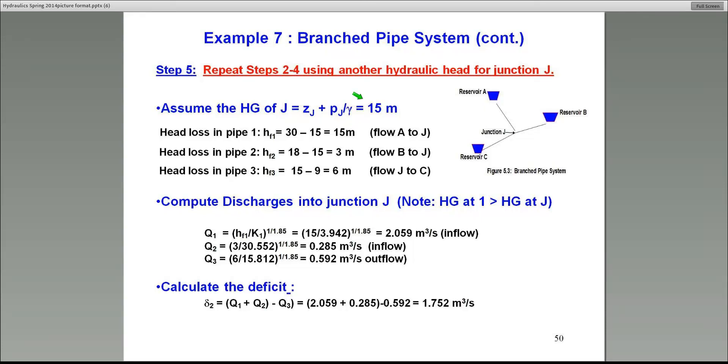Now, then you calculate the flows, like we did before. Q1 is 2.059, that's an inflow. So is Q2. Remember, we assumed the hydraulic head at junction J, 15 meters, to be below reservoir B. So the flow has to come out of reservoir B. That's basically what we call inflow into junction J. So those first two are inflows.